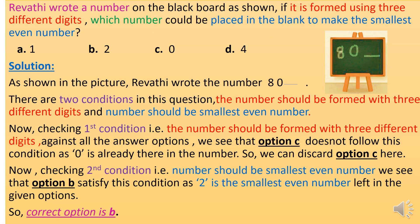Revati wrote a number on the blackboard as shown. If it is formed using 3 different digits, which number could be placed in the blank to make the smallest even number? As shown in the picture, Revati wrote the number 80 blank. Now there are two conditions in this question: the number should be formed with 3 different digits, and the number should be the smallest even number.